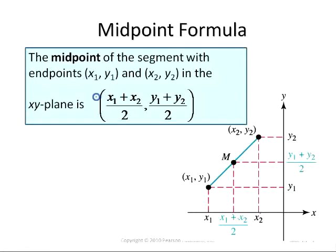In the formula, the little subscripts tell us which point that coordinate comes from. So this means the x-coordinate from the first point and this means the x-coordinate from the second point. This means the y-coordinate from the first point and the y-coordinate from the second point.